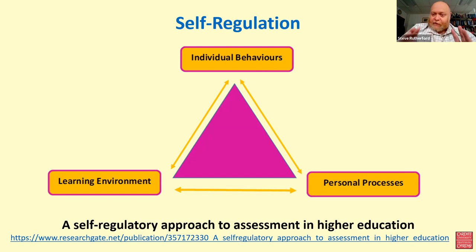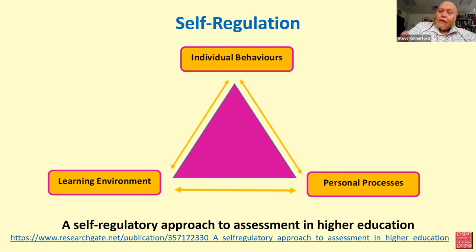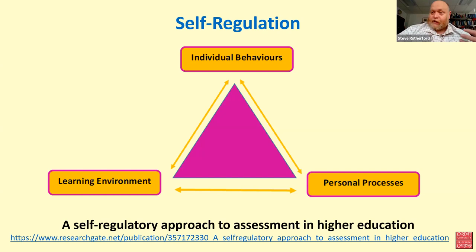Self-regulation has various different models. This particularly interesting one identifies that it's a correlation of three different areas: individual behaviours by the learner themselves, the personal processes by which they learn and develop, and then the environment around them — both the institutional environment, the people they interact with, and their own aims and purposes for learning. We have a cognitive, a metacognitive, and a positional or processual component.